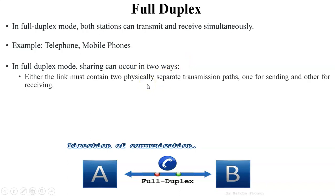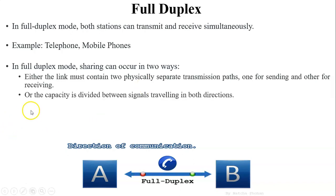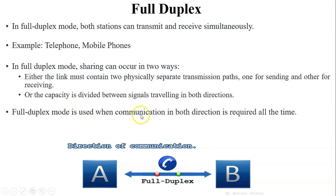In full duplex mode, sharing can occur in two ways. The first is two physical paths — one for sending and one for receiving. The second is that the capacity of the link is divided between signals traveling in both directions, meaning the bandwidth of the channel is shared between two users. If one user accesses the channel, they get 100 percent bandwidth; if both access at the same time, bandwidth is divided between the two users.